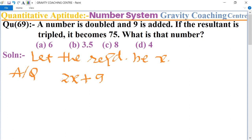This result is tripled, so we multiply by 3. The whole result equals 75. So 3(2x + 9) = 75.